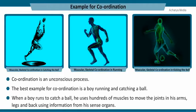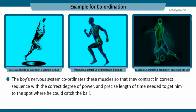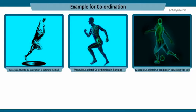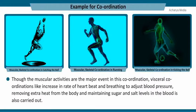The best example of coordination is a boy running and catching a ball. When a boy runs to catch a ball, he uses hundreds of muscles to move the joints in his arms, legs, and back using information from his sense organs. The boy's nervous system coordinates these muscles so that they contract in the correct sequence, with the correct degree of power and precise length of time needed to get him to the spot where he could catch the ball. Visceral coordinations like increase in rate of heartbeat and breathing to adjust blood pressure, removing extra heat from the body, and maintaining sugar and salt levels in the blood are also carried out.